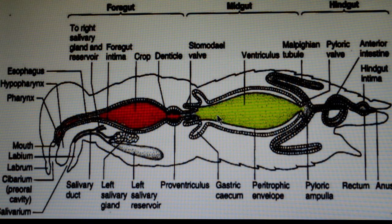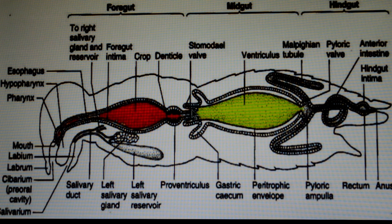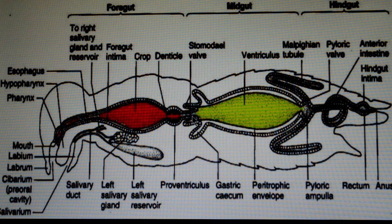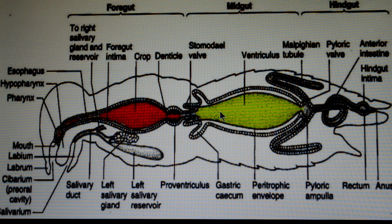At the junction of foregut and midgut, there is a valve called the stomodial valve, which prevents regurgitation of food particles. In the midgut, there are finger-like structures called gastric caeca or ventricular caeca, which increase the surface area for digestion and absorption of food particles, as most digestion and absorption takes place in the anterior part of the midgut.